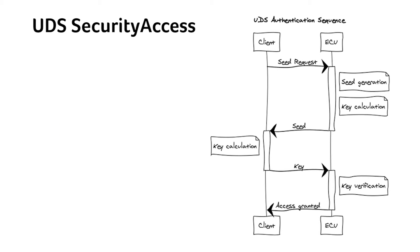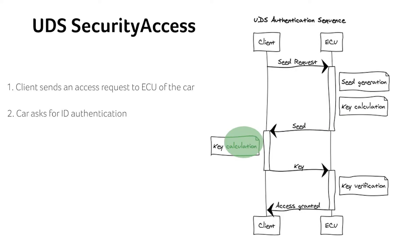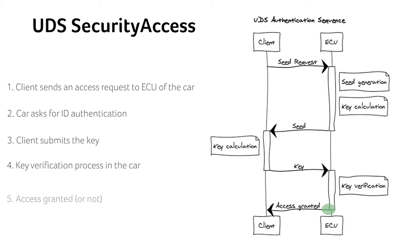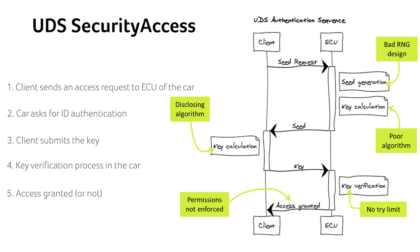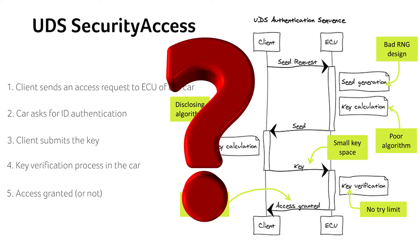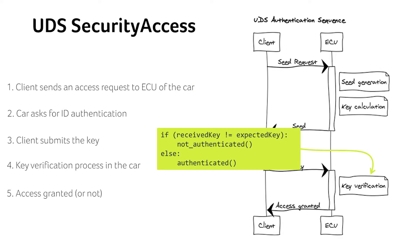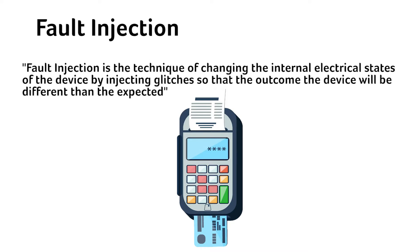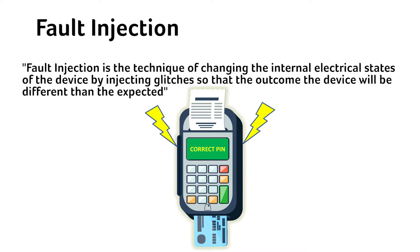During the UDS authentication sequence, the client sends an access request to the ECU of the car. The car communication protocol will ask the client for an ID authentication. When the client submits their key, a key verification process occurs, giving access to those clients only if the key is correct. This security access process can be vulnerable to attacks, but there are many mitigations and countermeasures to make its implementation more secure. But is this enough? Have you considered the impact of performing fault injection during security access? Fault injection is the technique of changing the internal electrical states of the device by injecting glitches so that the outcome of the device will be different than expected.